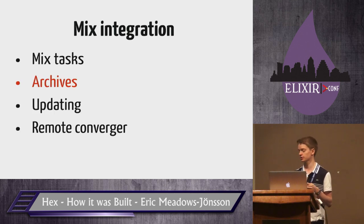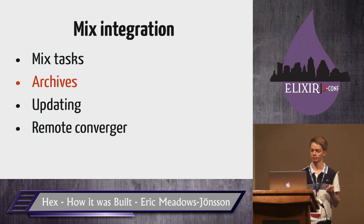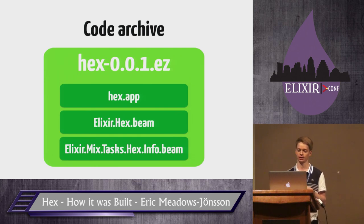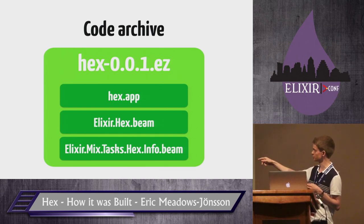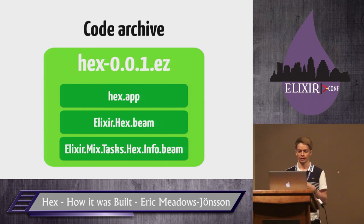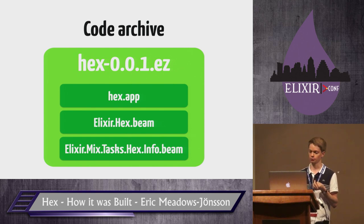Hex is installed as an archive — essentially a zip file containing compiled modules that the Erlang code server treats as a normal directory. Instead of a directory of compiled modules, you have a zip file of compiled modules that you add to your code path, and Erlang handles that. When Mix starts, all installed archives on your system will be loaded and their tasks will be available to you.